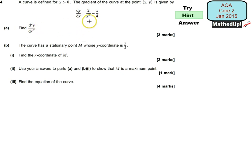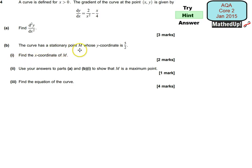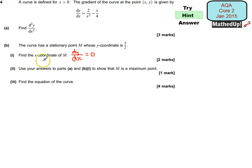In order to do this, you might want to write this as a power of x. For part B, the curve has a stationary point M whose y coordinate is 5 over 2. We first need to find the x coordinate of M. Because we know it's a stationary point, that means the gradient at that particular point is going to be equal to zero. So we can work out the x coordinate by setting dy/dx equal to zero, and that's going to tell me the x coordinate.